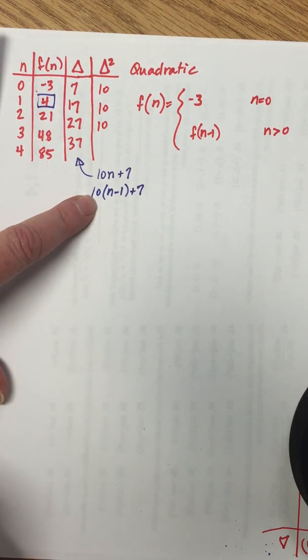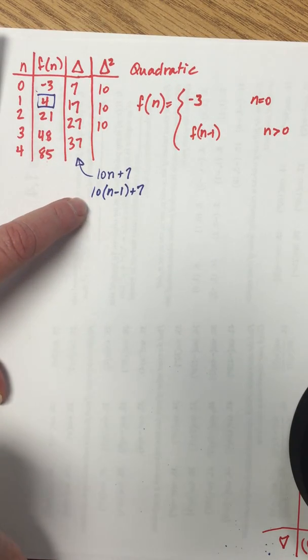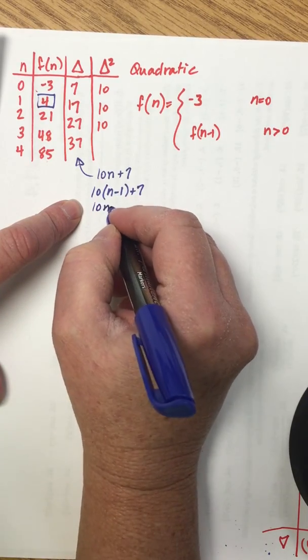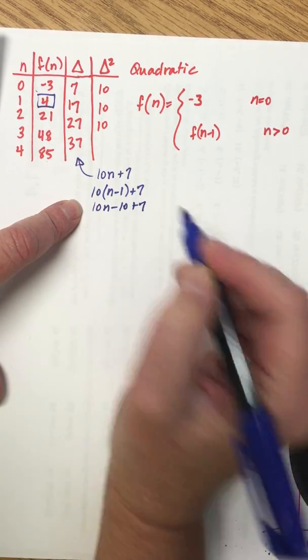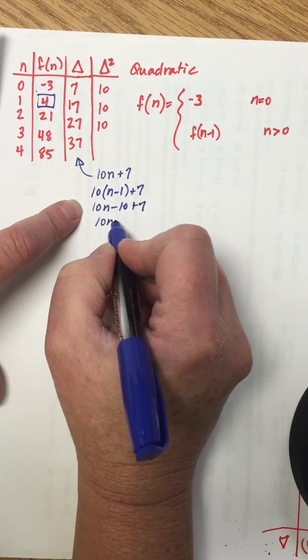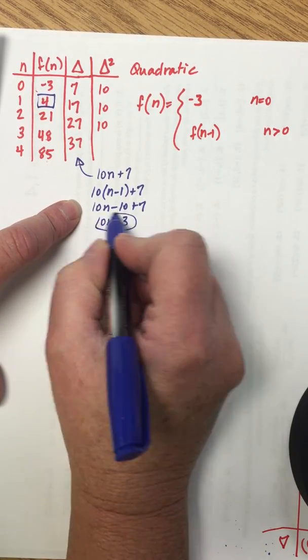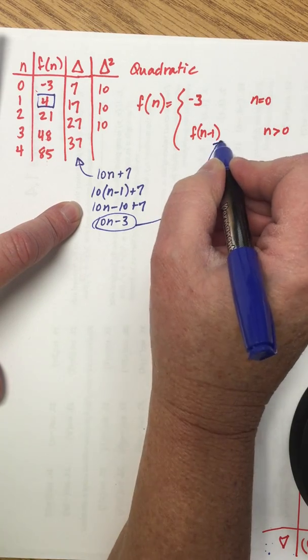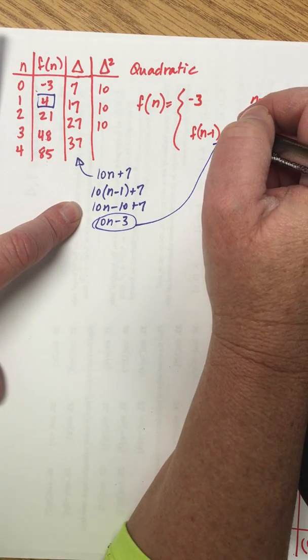Now distribute the 10: 10n minus 10 plus 7, and simplify your numbers: 10n minus 3. And this is the linear component that is added to the output that comes before to get the next output.